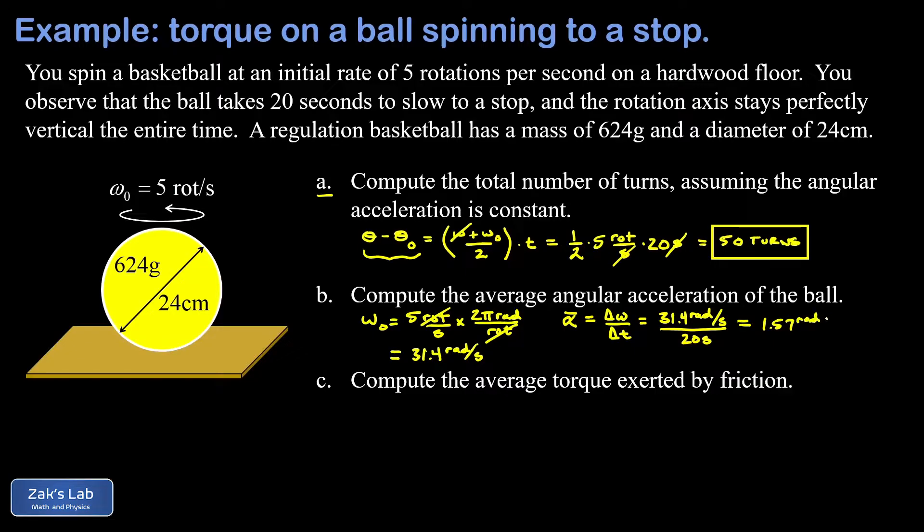Finally, in part c we want to compute the average torque exerted by friction. Friction is what caused this thing to slow down, so what we're looking for is just the average torque exerted on this ball as it goes from the initial angular velocity to the final. Our average torque is going to be given by the moment of inertia times the average acceleration.